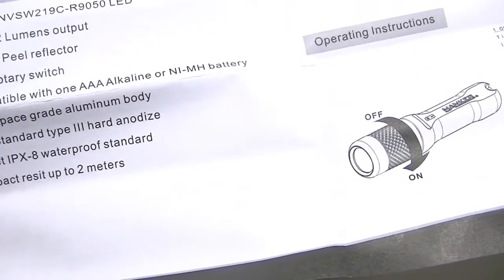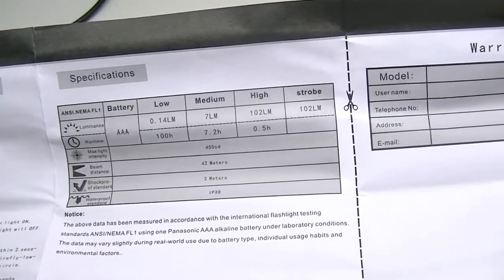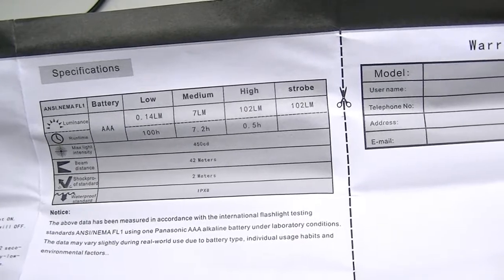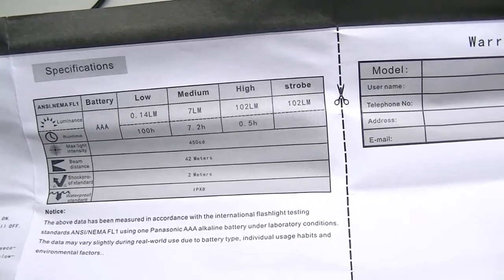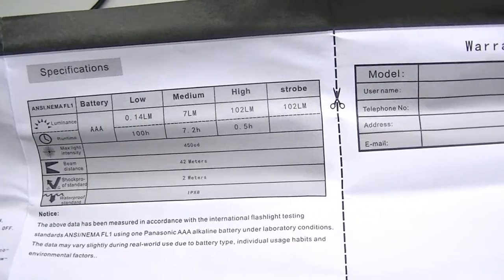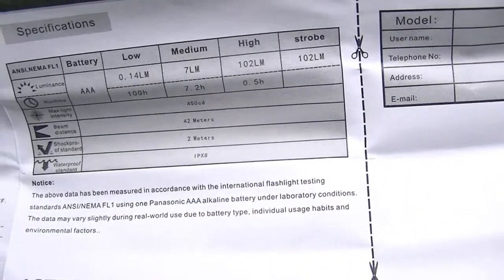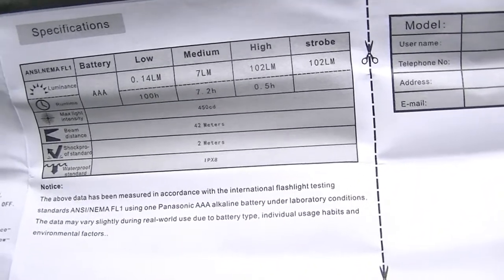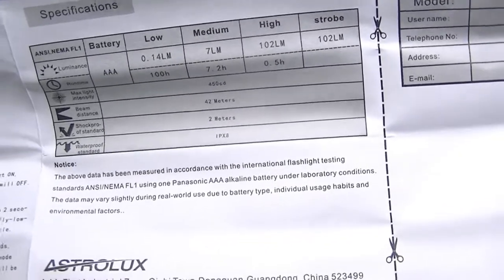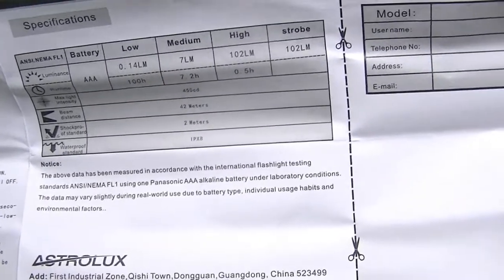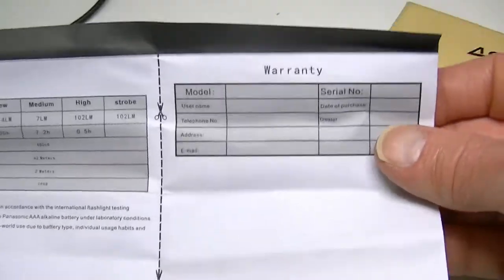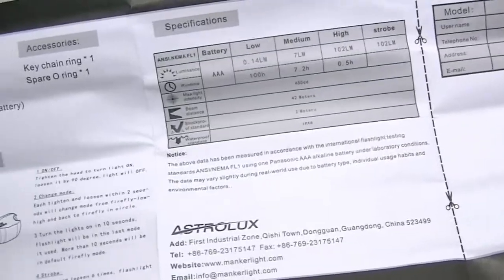Aerospace grade aluminum body, it's waterproof, and here are the outputs on the light: 0.14 for low, 7 for medium, 102 for high, and there's also a strobe mode. The beam distance is 42 meters, and as I mentioned, it is waterproof to IPX8, so you can drop it in water and not really worry about that.